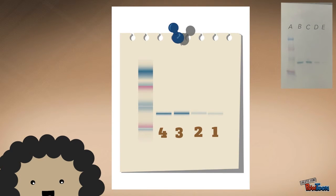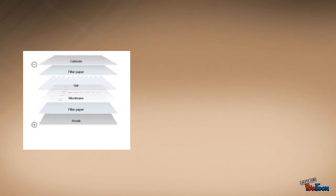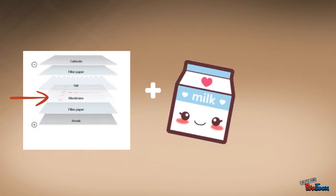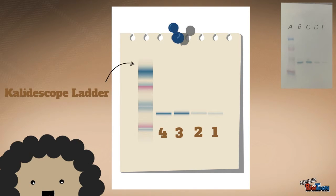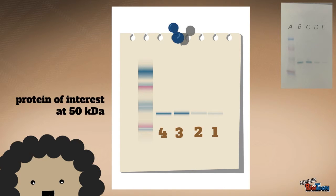Now let's take a look at the western blot — what a majestic western blot! The western blot was done on a nitrocellulose membrane, which was soaked in a milk solution with TBS overnight. Remember that western blot is semi-quantitative and tells us whether or not the protein of interest exists in each fraction. The results shown are after antibody incubations and washes. The kaleidoscope marker is on the far left, and fractions are in descending order from fraction four to fraction one. The protein of interest is present in each fraction, as indicated by a band around the 50 kilodalton marker.